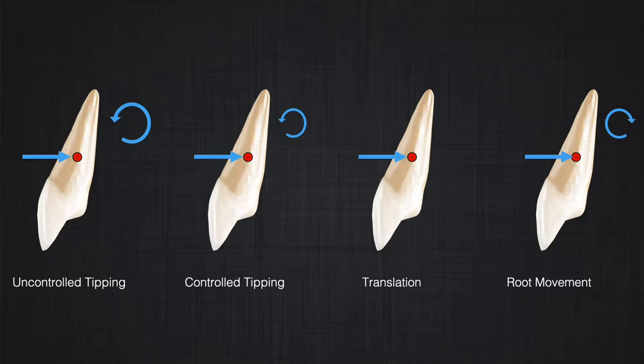If you look at all the examples discussed today and put them in one slide, in all of the examples, if you look at the equivalent system, the magnitude of the force didn't change. However, the amount of the moment changed. In uncontrolled tipping, we had the largest moment. In controlled tipping, we had a smaller moment. In bodily movement, that moment started to become close to zero. And when we get to root movement, the moment changed direction. By changing the point of application of the force, we were able to produce all types of tooth movement.